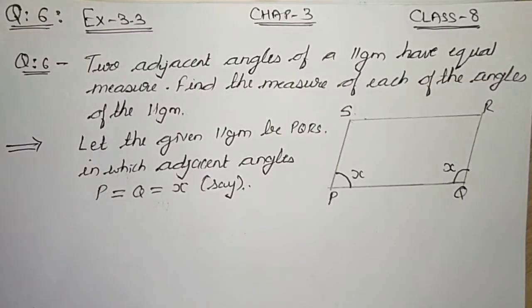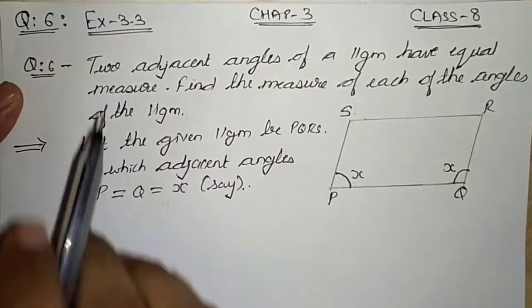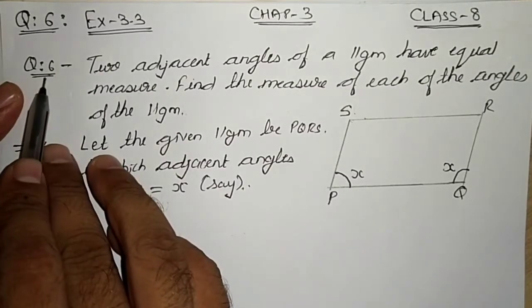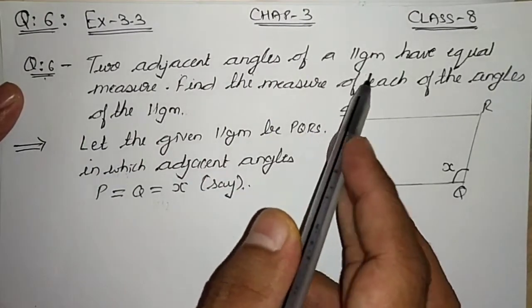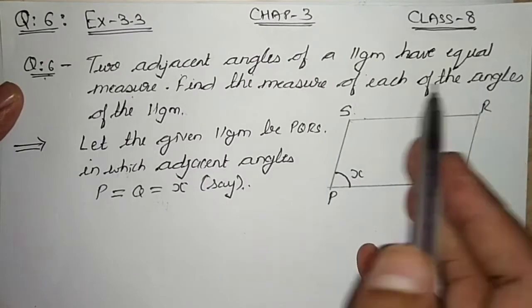Hello students, welcome back. Today we are going to solve question number six of exercise 3.3, chapter 3, understanding quadrilaterals. Question number six says: two adjacent angles of a parallelogram have equal measures, find the measure of each of the angles of the parallelogram.